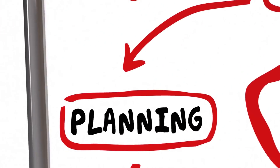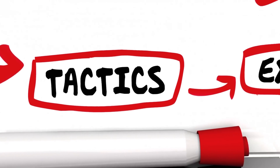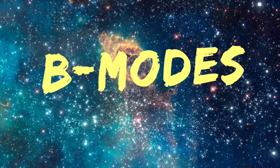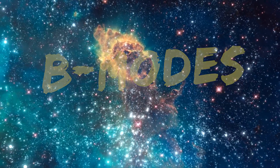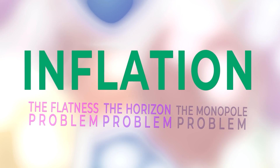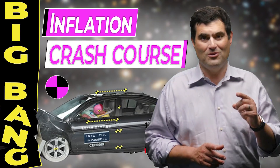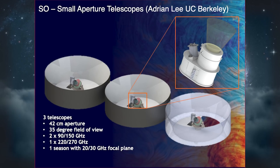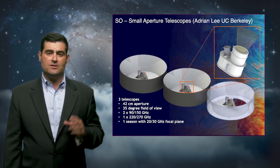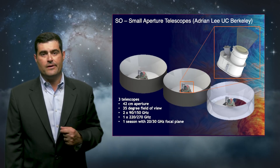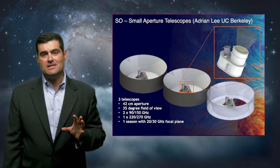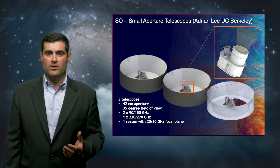We're going after these primordial B-modes, which will occur — if they exist, if inflation took place, if the multiverse is true — at large scales. That will allow us to falsify these competitive models that don't feature this primordial hyper-expansion faster than the speed of light, as we've talked about in previous videos on inflation. We'll have three small aperture telescopes in the Simons Observatory that will allow us to see in six different frequency channels — several to guard against dust, several to measure synchrotron radiation, which is a lower frequency phenomenon, and several to measure the CMB signals alone.